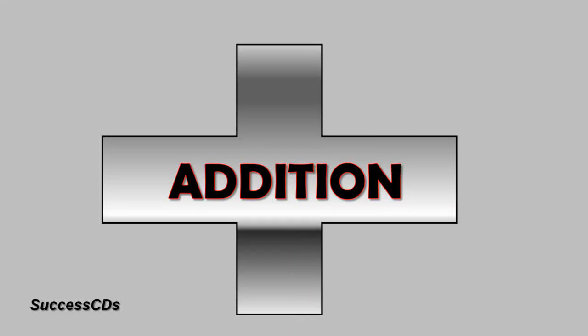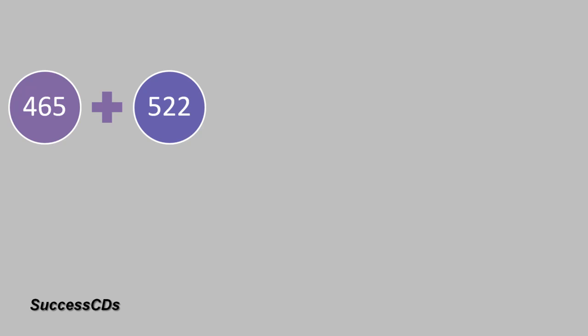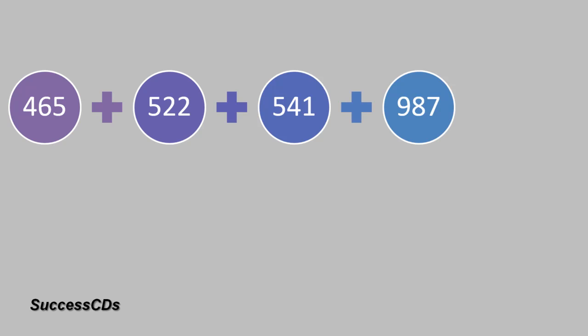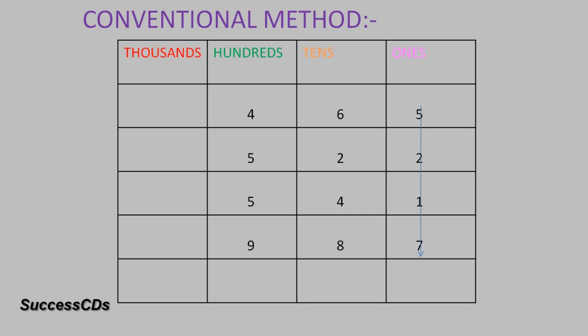First of all, addition. For three-digit numbers, I'll give you an example here: 465 plus 522 plus 541 plus 987. Now you have to find this sum. As far as the conventional method is concerned, you start from the ones place and add up these digits. The total is 15, so you write 5 in the ones place and carry over 1 to the tens place. Then you add up the tens digits, you get 21. You write 1 in the tens place and carry over 2 to the hundreds place. Similarly, you add up the hundreds digits and get 25. You write 5 in the hundreds place, carry over 2 to the thousands place, and get the answer 2515.